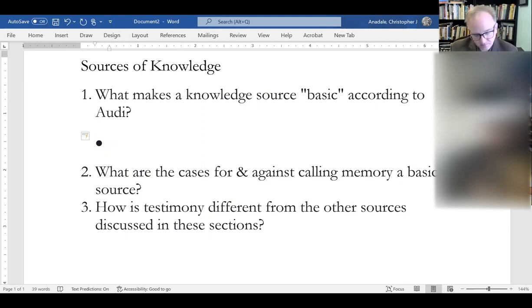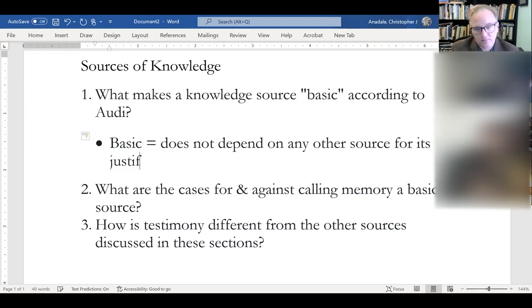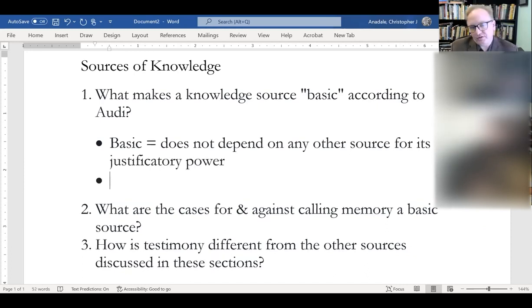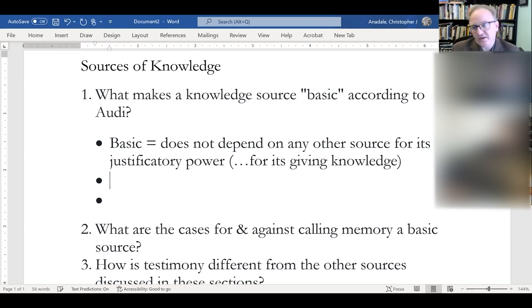So it doesn't depend on anything else or any of the other sources for its justification. Maybe we have another way to say it, perhaps. It doesn't depend on any other source for its justificatory power. To call a source basic, it yields knowledge without any positive dependence on the operation of some other source of knowledge or justification. A basic source is a source that does not depend on any other source for its giving us knowledge.